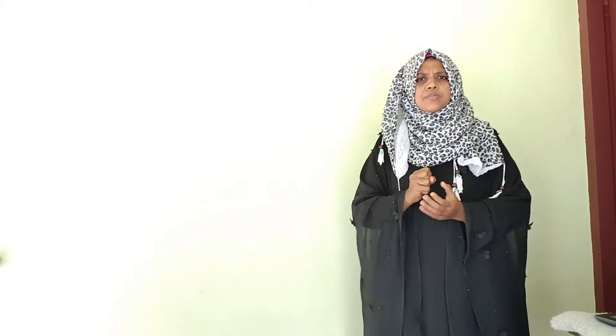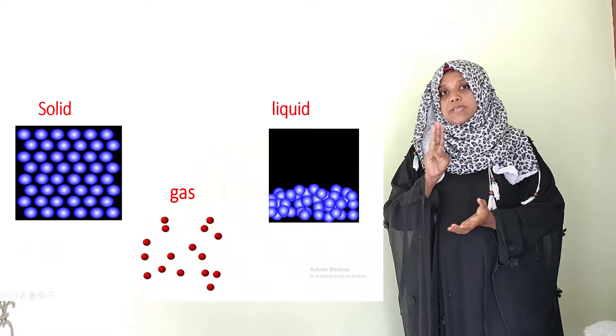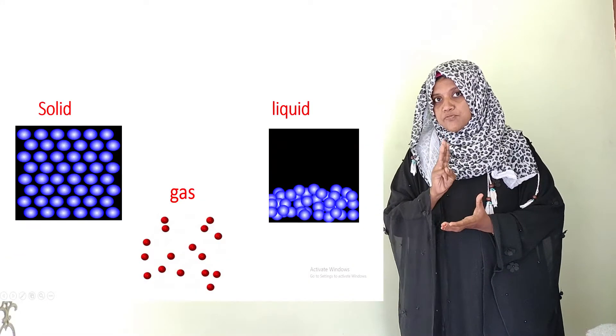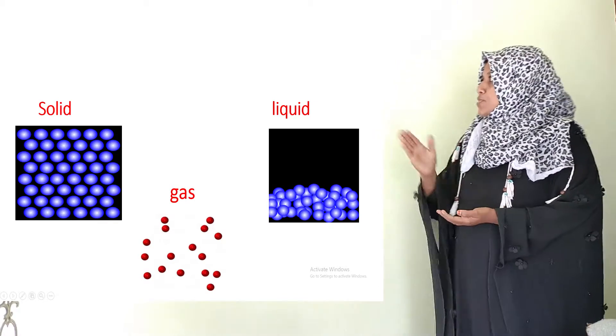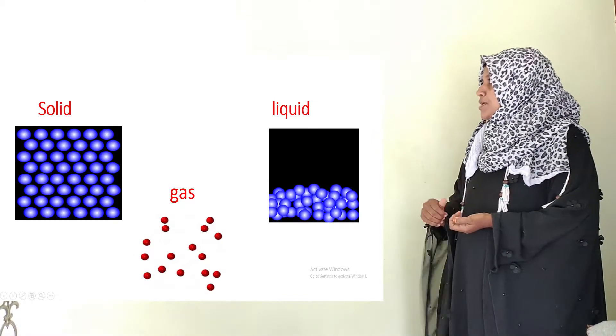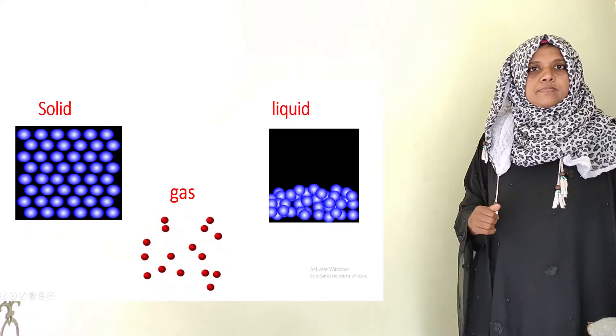The first topic is matter. Matter is anything which occupies space and has mass. Matter can be mainly classified into three types: solid, liquid, and gas.